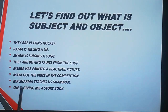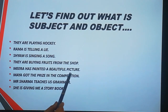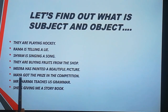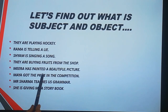Meera has painted a beautiful picture. Who has painted? Meera. So Meera is our subject. What has Meera painted? A beautiful picture. A beautiful picture is our direct object. Maya got the prize in the competition. Who got the prize? Maya. So Maya is subject. What did she get? She got the prize. The prize is direct object.